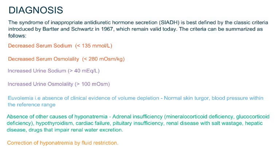SIADH is best defined by the classic criteria introduced by Barter and Schwartz in 1967. The criteria can be summarized as follows. In SIADH there is increased water reabsorption that causes decreased sodium levels in the blood by excreting it out through urine. So the serum sodium and serum osmolality will be decreased, and urine sodium and urine osmolality will be high. Also, even though there is water retention in the body, it is not enough to cause hypervolemia, so the volume status of the body will be normal or euvolemic.